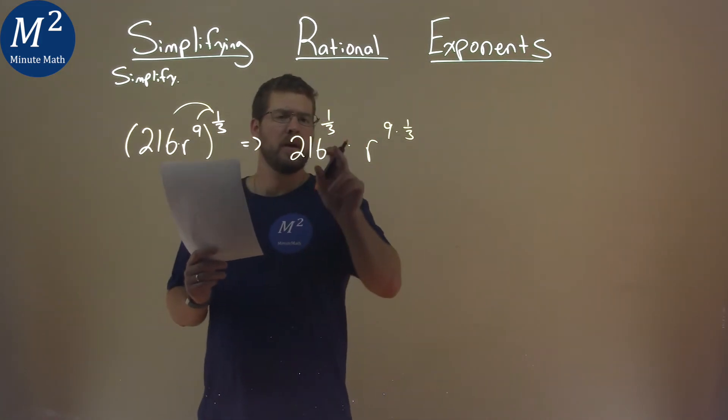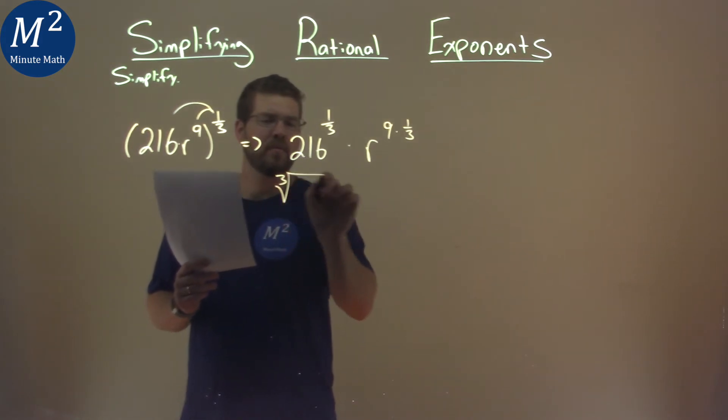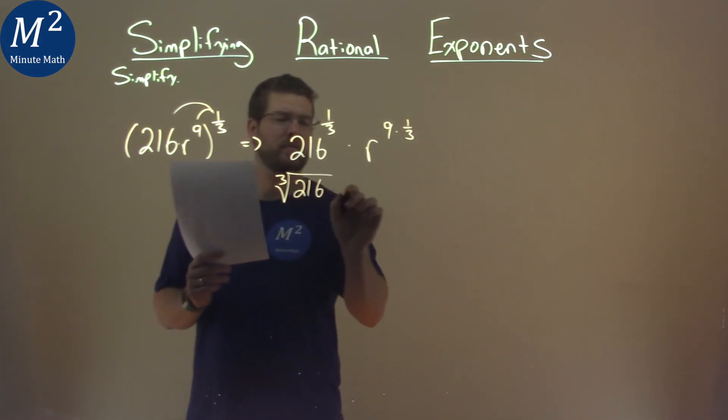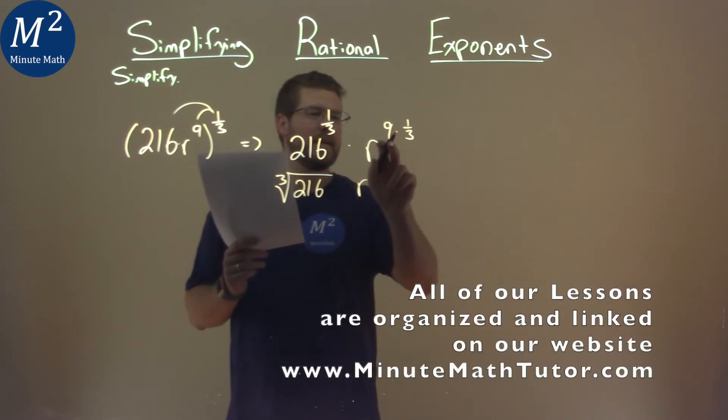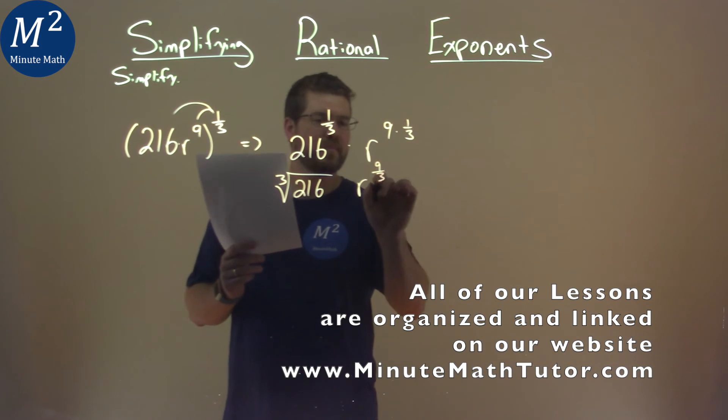Let's keep on going. One-third as an exponent is the same thing as a third root. So we take the third root of 216 here, and we're multiplying by r. Well, nine times one-third is really just, what, nine-thirds? Not too hard.